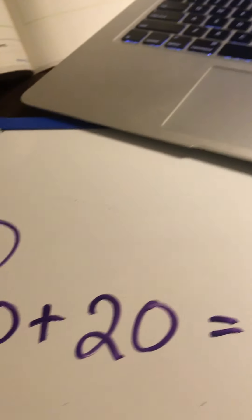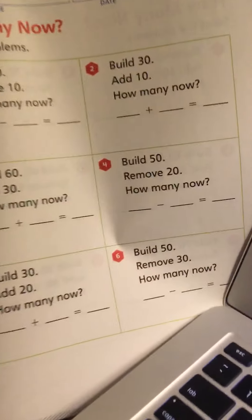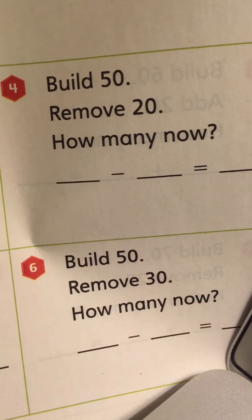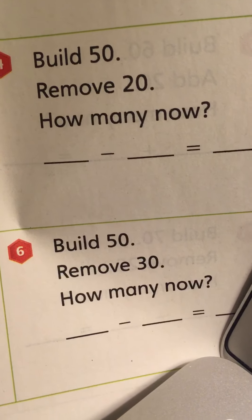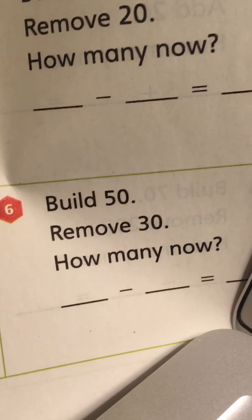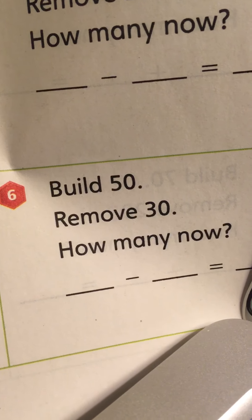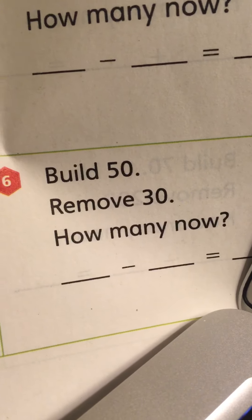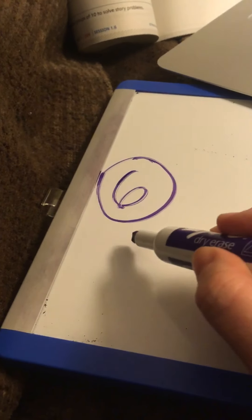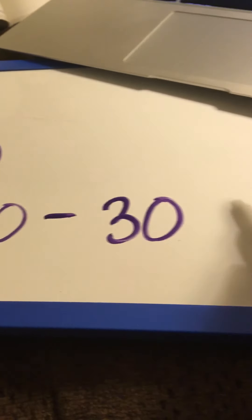We only have one more today, first graders — you're doing a great job! Our last one for today is number 6. Let's read number 6 together: Build 50, remove 30. How many now? So we're removing some numbers, which means we're subtracting — removing is another way of saying take away or subtract. Let's write our equation: 50 minus 30 equals.